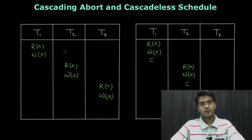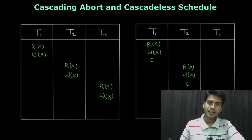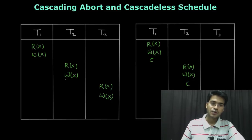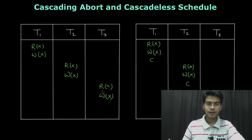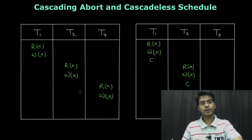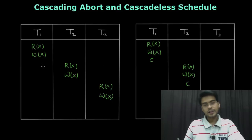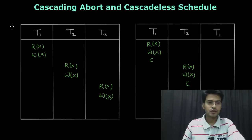Hello everyone, welcome back. In this video we will understand what cascading abort is and what a cascadeless schedule is. Cascade means when the effect of one thing is migrated to another and followed by another — basically the effect is migrating from one to the next. We will see this same effect happening here. Let's start with an example.